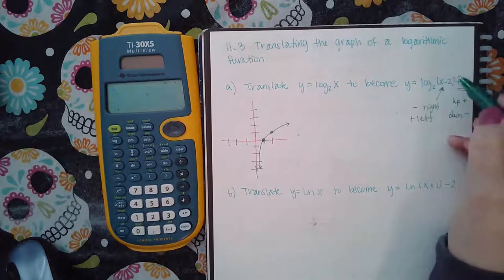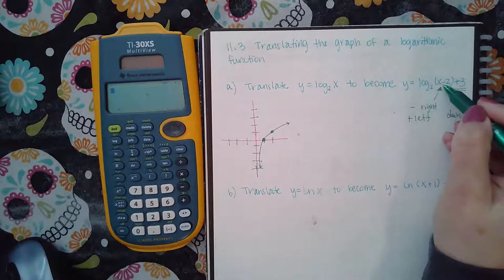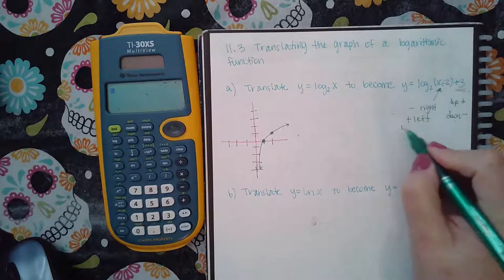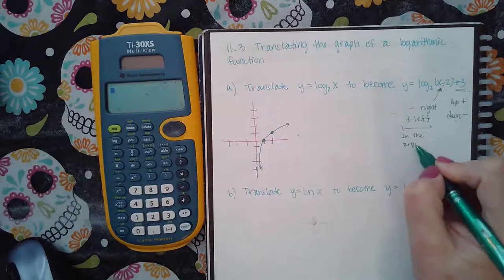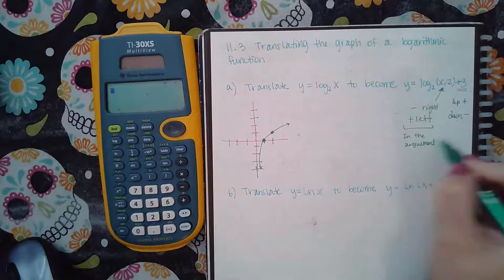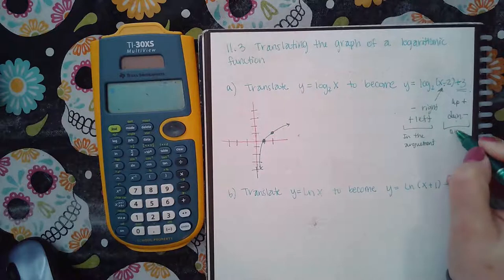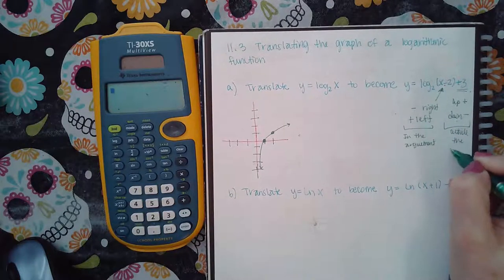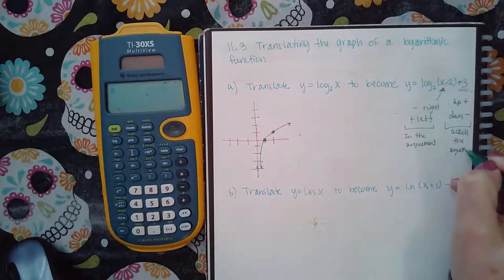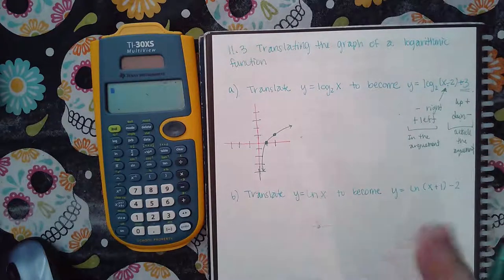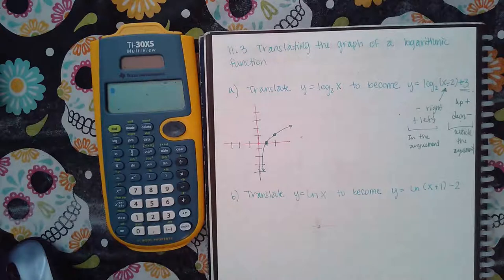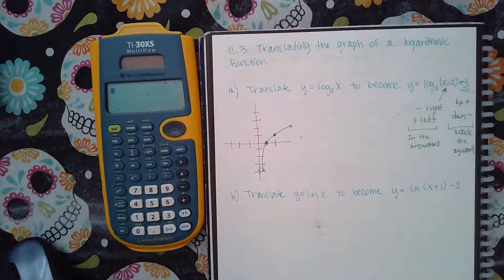Okay so it's whether or not you're in the argument or outside the argument. So this is in the argument and then this is outside the argument. So you have to pay attention to whether the plus or minus is happening in the argument of the log or it's just off to the side after you've already dealt with the log, it's just a plus three off to the side.